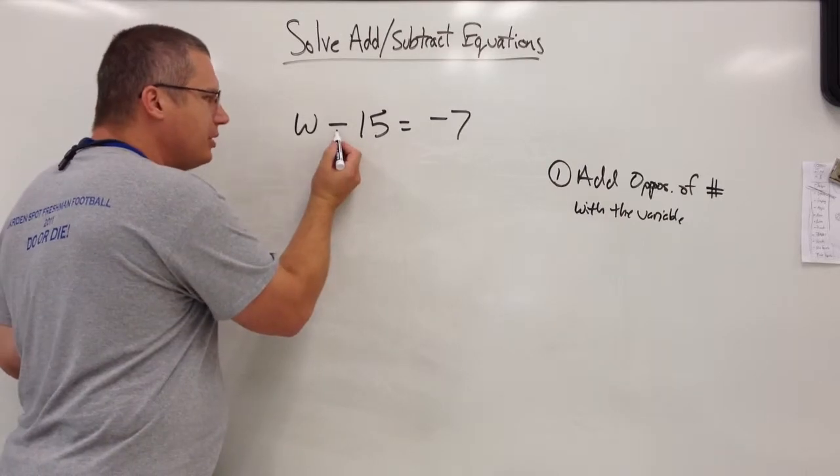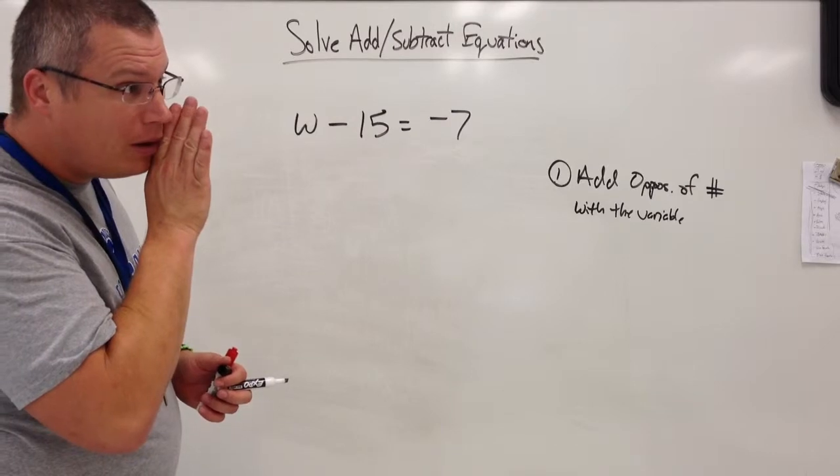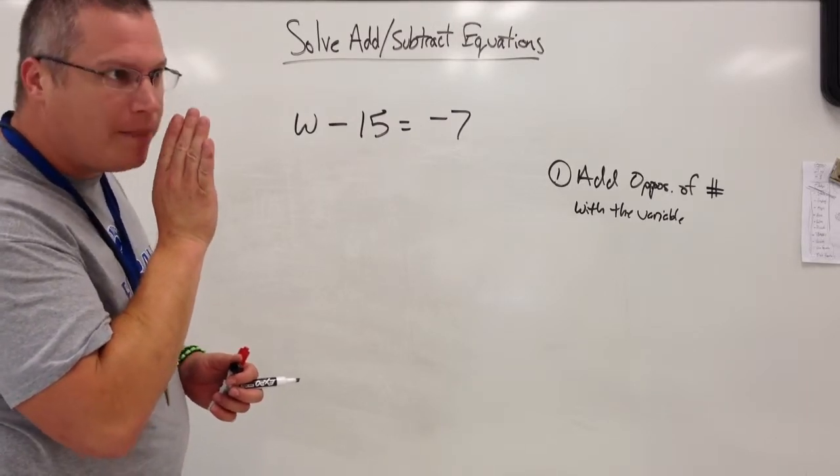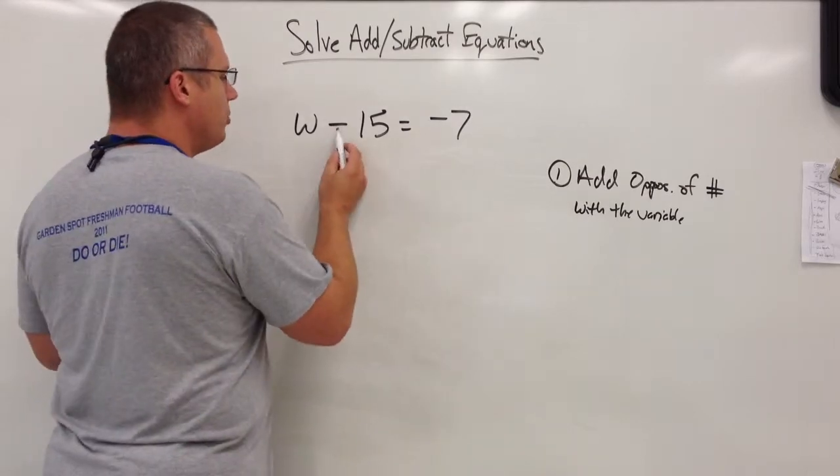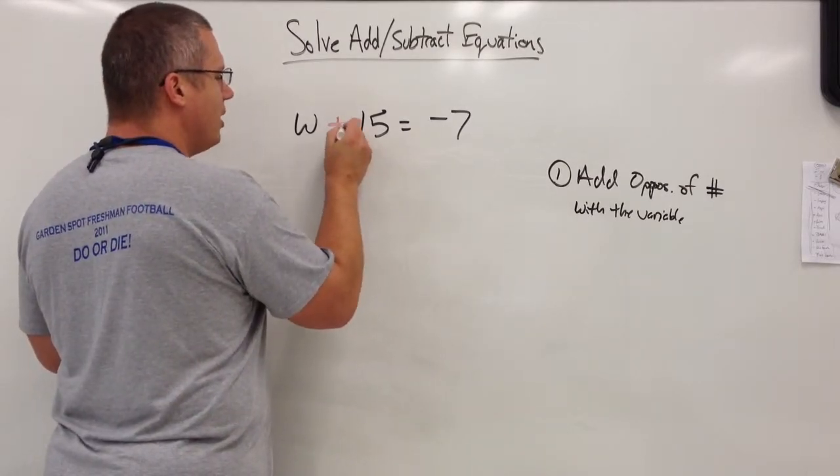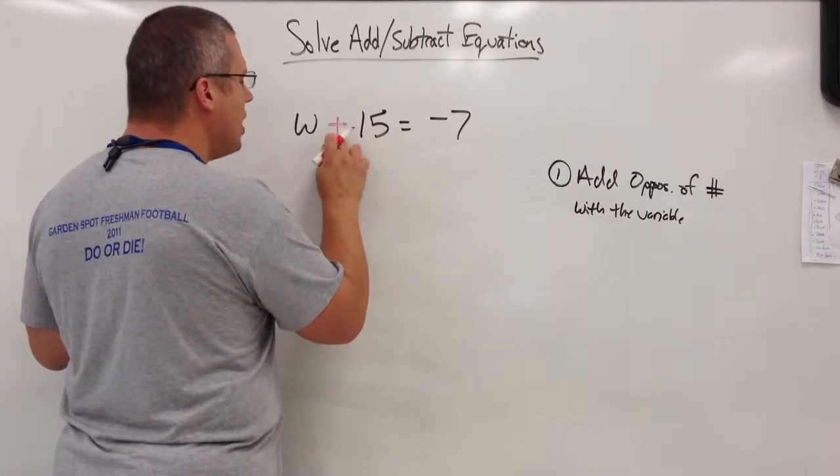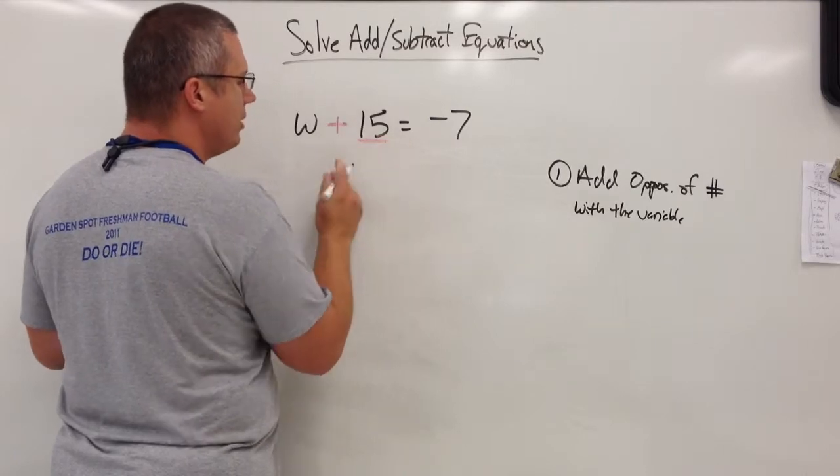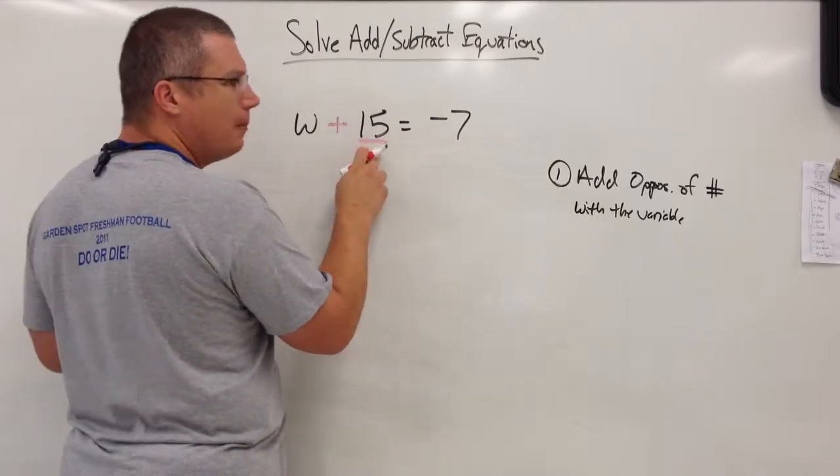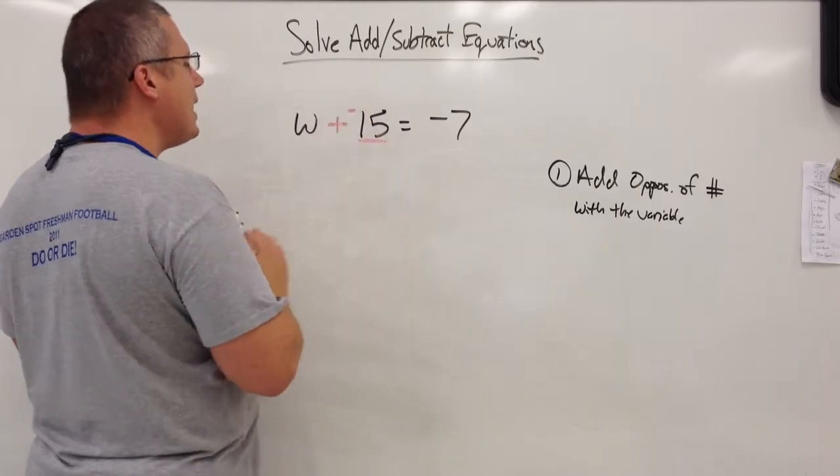But before I can even do that, here's a subtraction sign. What do we do with subtraction? We always change it into addition. That's right. Why? Because it's easier. That way it's one less thing to know about. I know how to turn subtraction into addition, so I make this a plus sign. Wait a minute. Something else has to happen. What happens to the number or the term that is to the right of it? That's right. It becomes its opposite. So this is positive 15. What's the opposite of positive 15? Negative 15. So this is negative 15.